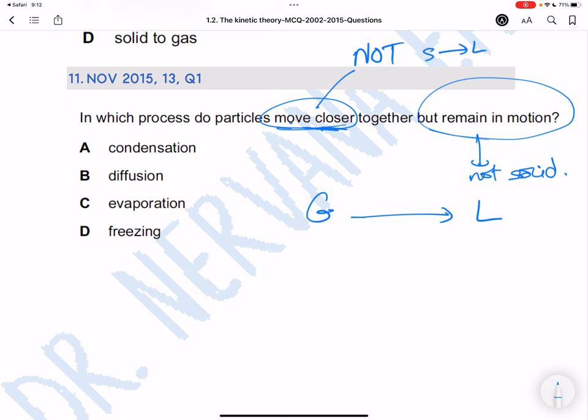It cannot be solid to liquid or liquid to gas, because solid to liquid and liquid to gas—like basically melting and boiling—particles are getting further from each other. But this is getting closer. So it's got to be liquid to solid or gas to liquid.